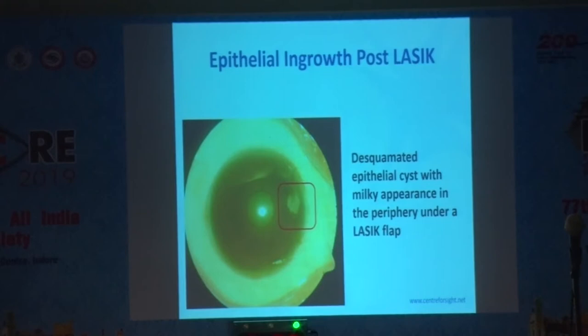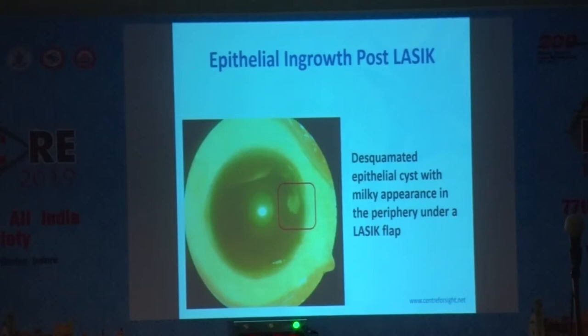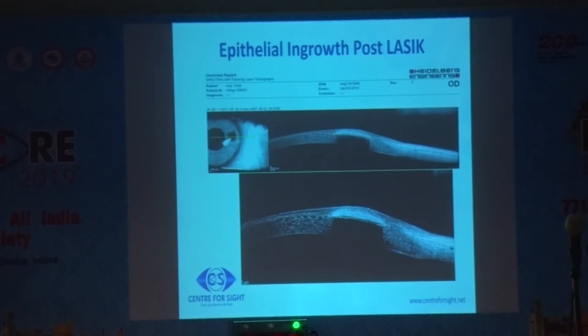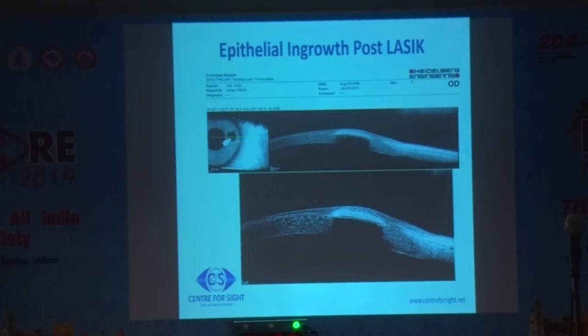This is a case of epithelial ingrowth post-LASIK surgery — you can see this whitish patch underlying the flap area at the border of the flap. The AS OCT image of the same patient shows the extent of the epithelial cyst is around 2.6 mm, with significant thinning of the epithelium overlying the flap. In the periphery, flap thickness is around 120 microns, and in the area of the epithelial cyst it decreased to 90 microns. We proceeded with surgical removal of the epithelial ingrowth, and the patient is doing fine.